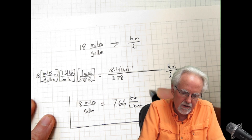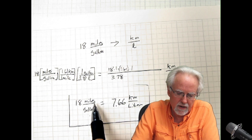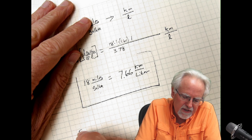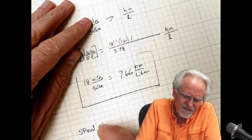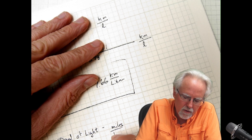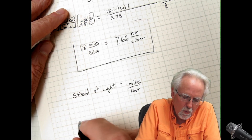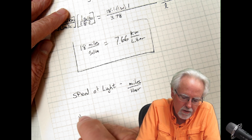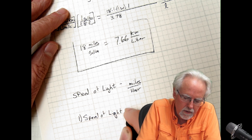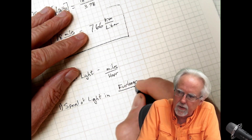So here is what we have done: we converted inches per second into miles per hour, and we converted miles per gallon into kilometers per liter. Now for your homework. Number one: you can look up the speed of light in miles per hour on the internet — what is the speed of light in furlongs per fortnight?